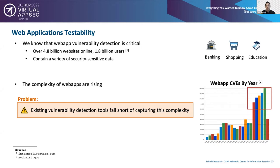What has been somehow ignored is that the complexity of web applications is also rising. Web applications today are far more complex than they used to be. As a result, existing detection tools fall short of addressing this ever-increasing complexity. There's a gap between what we can detect and the complexity of web applications, and in my research I try to narrow down this gap.